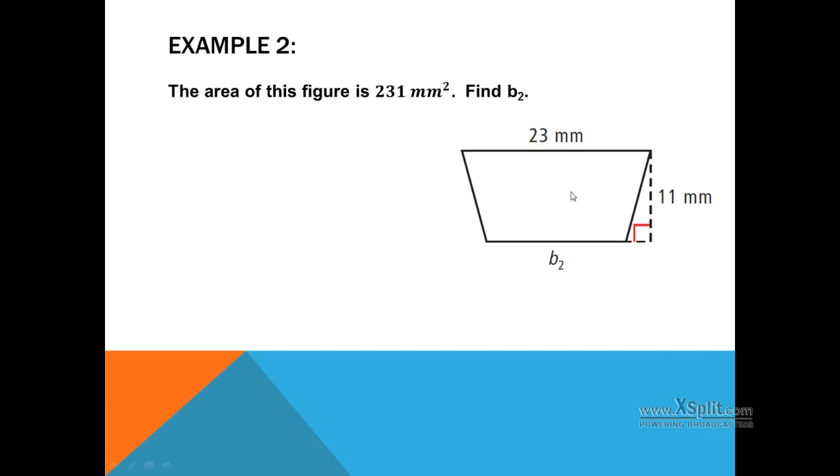In this next diagram, we have a trapezoid. We're given one of the bases. We're given 23. We're given the height, 11. We're not given the other base, though. We need to find this other base. Notice on top, we are given that the area is 231. As we start out this problem to try to find the missing base, start out by writing down the equation. We know area is equal to base one plus base two, divide that by two, times our height.